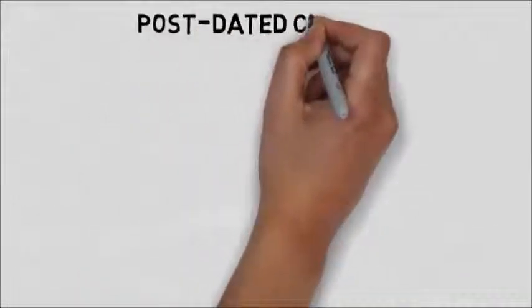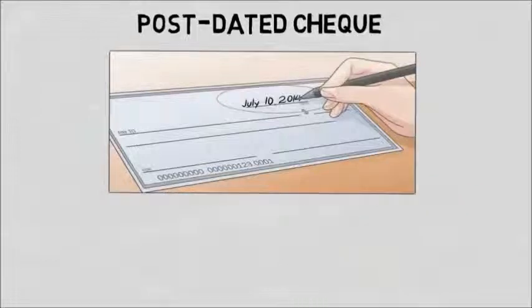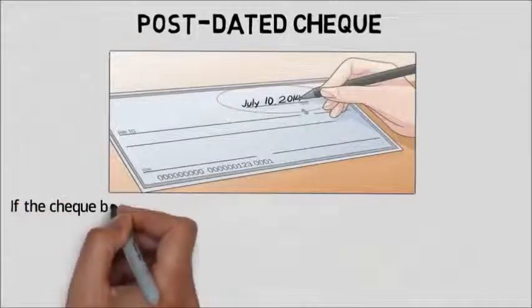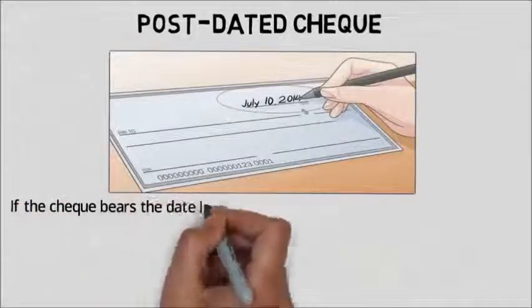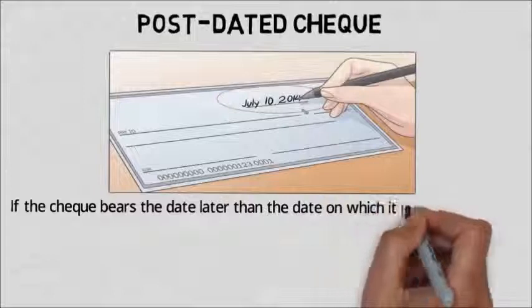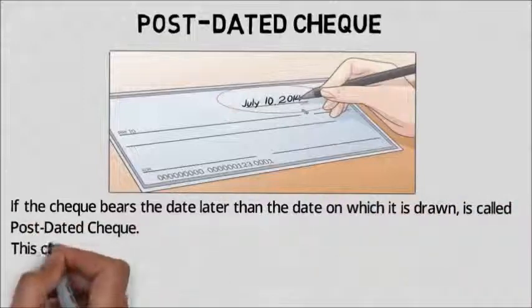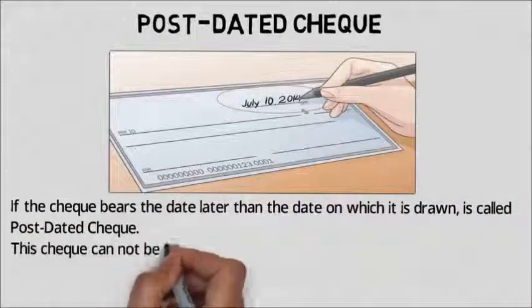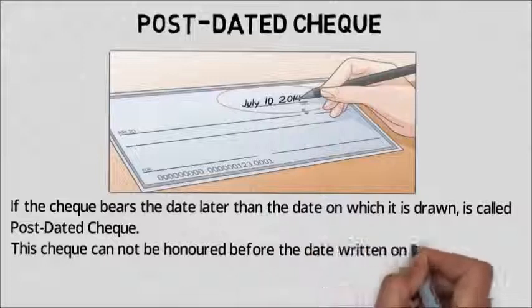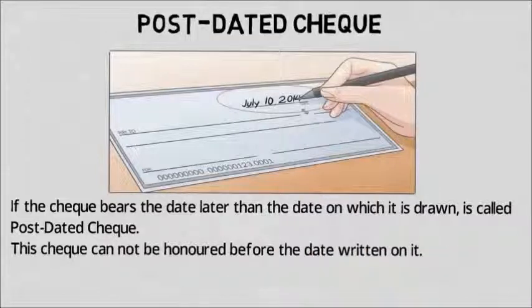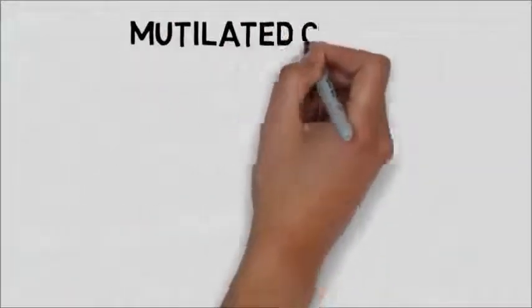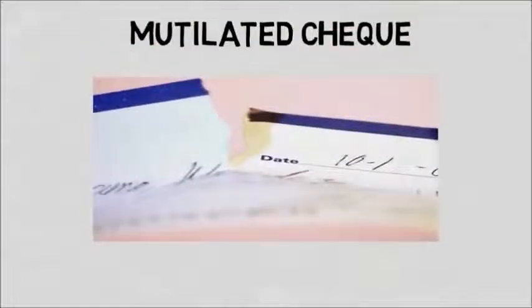A post-dated check bears a date later than the date on which the check is drawn. This check cannot be honored before the date written on it. A mutilated check is a check which is torn into pieces and is not acceptable by the bank.